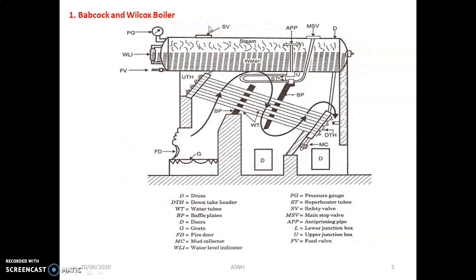Accessories like economizer, superheater, and air preheater are also required to improve the efficiency of the thermal power plant. In summary, the Babcock and Wilcox boiler is a horizontal cylindrical shell connected by tubes through downtake and uptake headers, through which water is continuously circulated. The rest of the portion is surrounded by fire, and a number of bricks are used in construction.